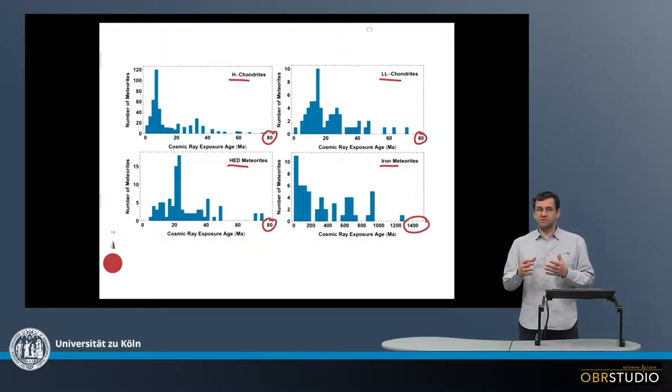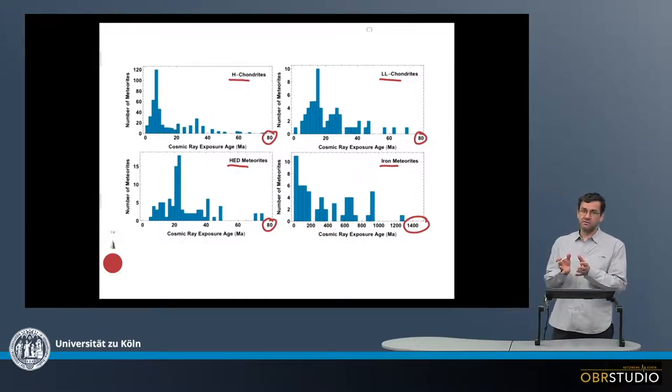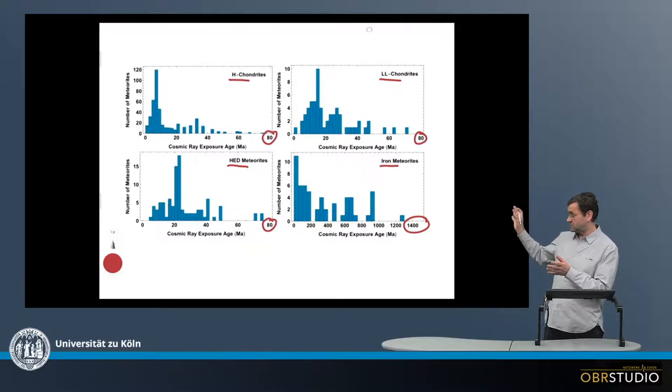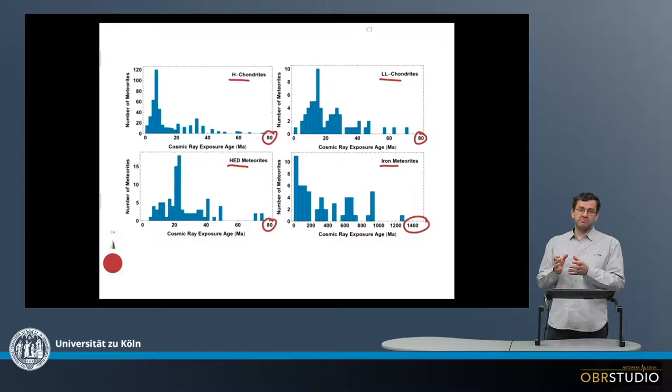All these processes are typically summarized as space weathering. And it is then interpreted that this observation means the stone meteorites are more easily destroyed by space weathering than the iron meteorites.